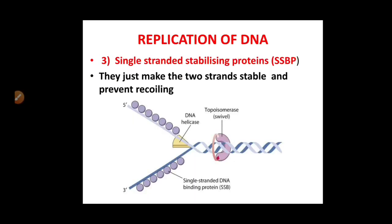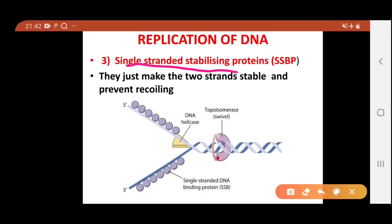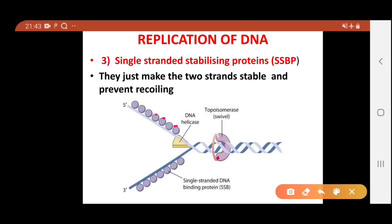The third requirement is single-stranded stabilizing proteins (SSBP). Once helicase breaks the hydrogen bonds and opens the double strand, those attractive bonds could reconnect. SSBP binds to the single-stranded template strands to keep them stable and prevent them from recoiling or rejoining. Their function is to make the two separated strands stable and prevent recoiling.